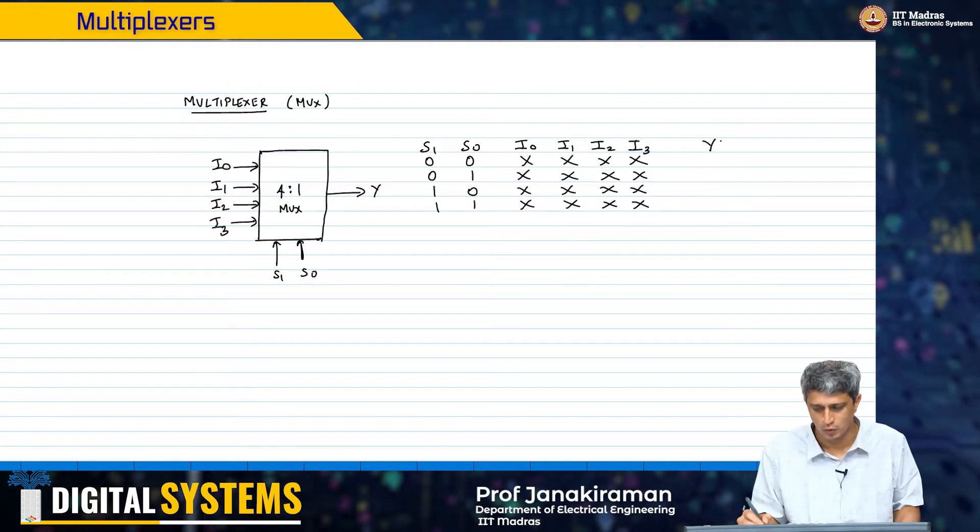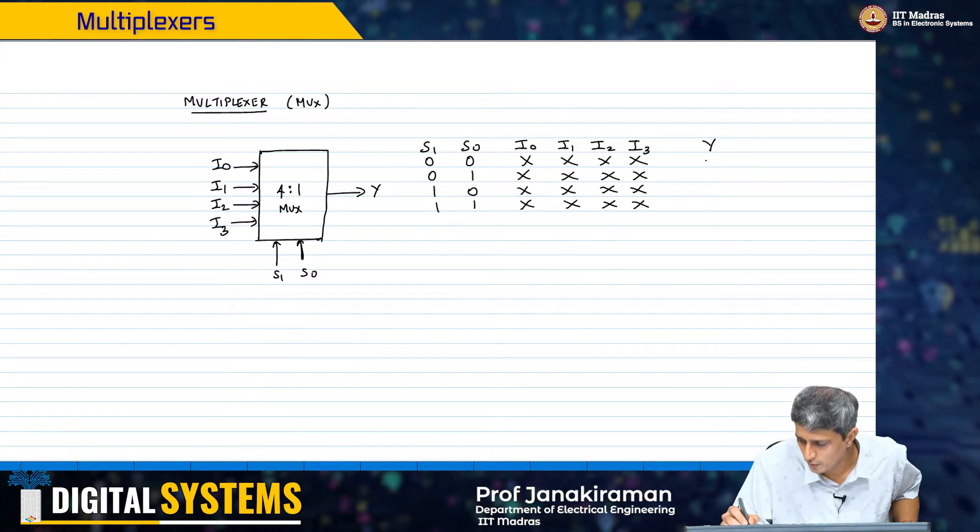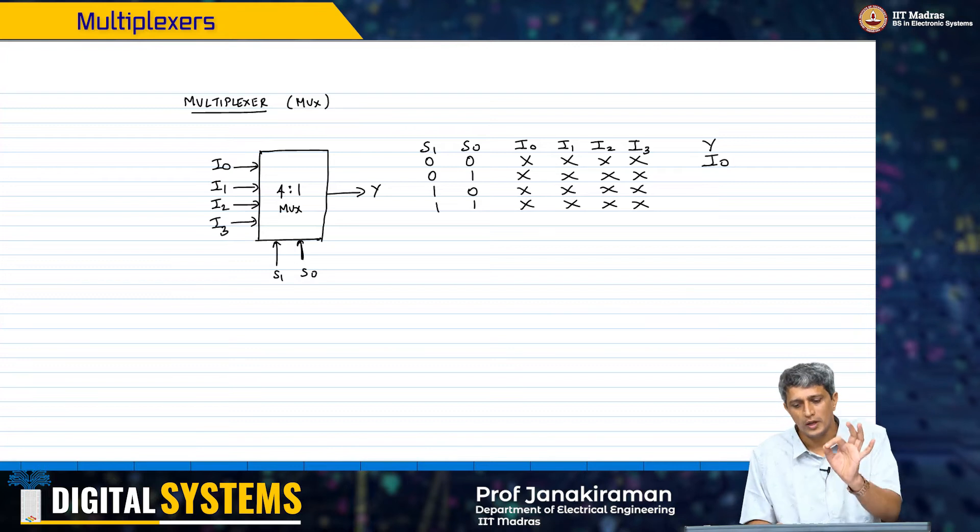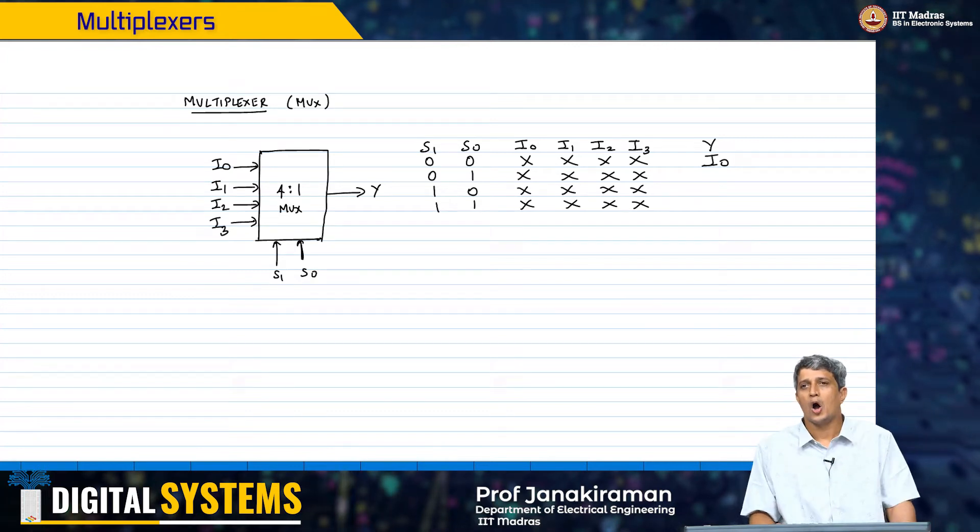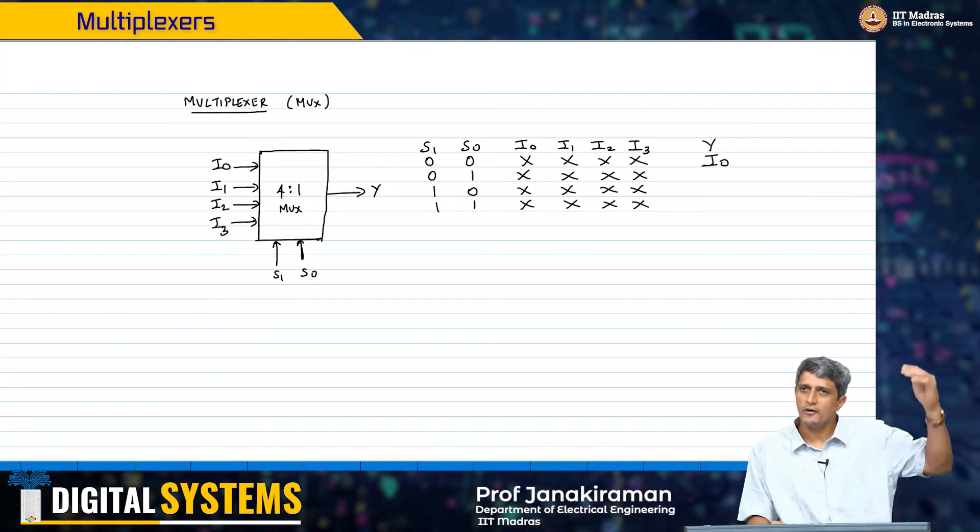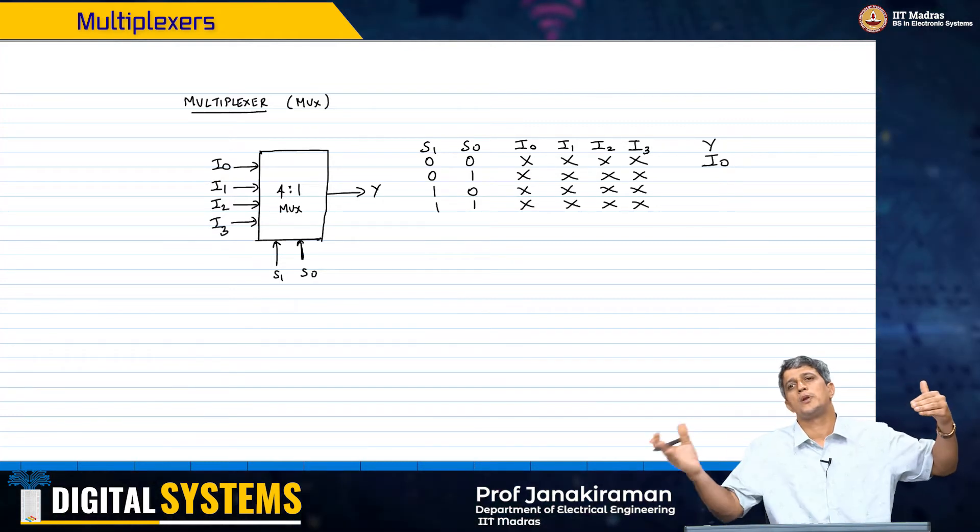I have one output y. If S1 S0 is 0 0 then I want I0 to be the thing. What does that mean? It means if I0 is 0, y should be 0. If I0 is 1, y should be 1. Or as long as S1 and S0 happen to be 0 0, whatever input you give on I0 should simply appear at the output y.